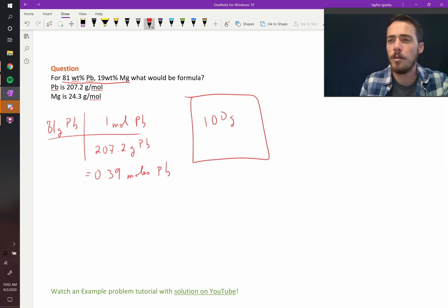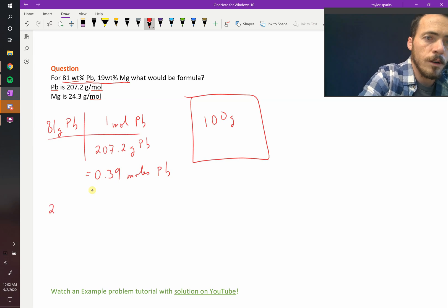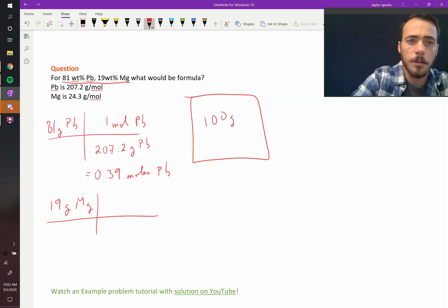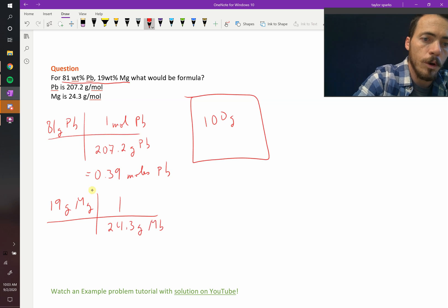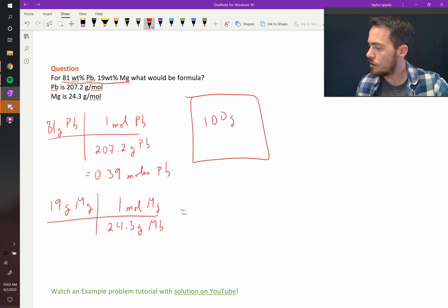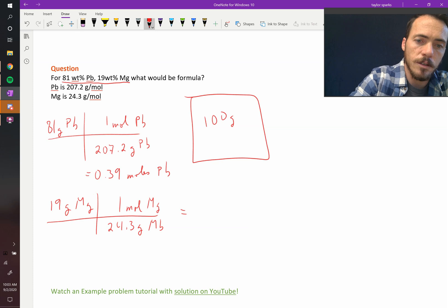Now let's do the same thing with magnesium. There would be 19 grams of magnesium. Let's convert that to moles by dividing by its atomic mass. So that is 24.3 grams of magnesium per 1 mole of magnesium. When we do that, we find that it's equal to 0.78. So there are 0.78 moles of magnesium.